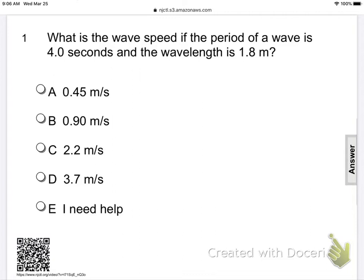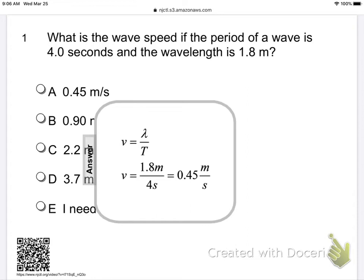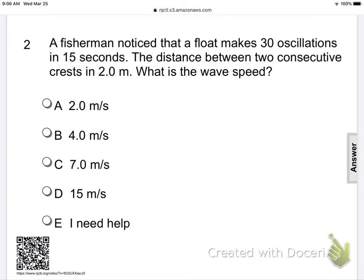What's the wave speed if the period of a wave is 4 seconds and its wavelength is 1.8 meters? We substitute in wavelength of 1.8 meters over the period, which is 4 seconds, and we come out with 0.45 meters per second.